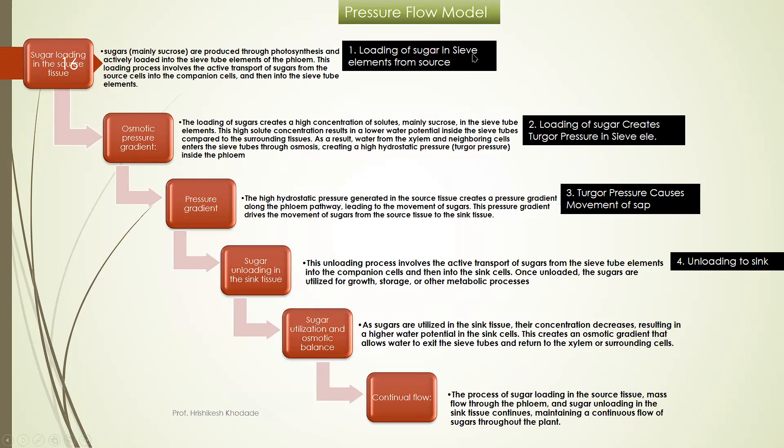In first stage loading of sugar in sieve tube element from source takes place. The next step loading of sugar creates turgor pressure in sieve tube elements. And third step turgor pressure causes movement of sap from leaf to the root. And in fourth step you can notice unloading of sugar to the sink area takes place.